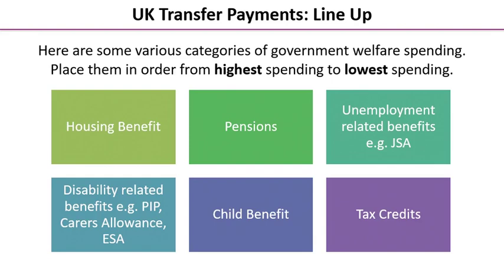Here's a little activity looking at transfer payments or welfare payments — this is what we call a line-up activity. Your task is to take a look at the six categories of government welfare spending on the screen. These aren't all of the categories, but these are six really important ones. Place those items of welfare spending into order from the highest amount of spending annually to the lowest. Pause the video while you do that task, then restart it to check your answers.